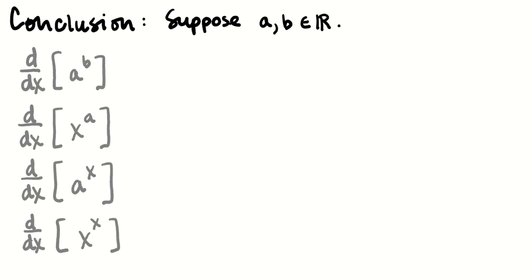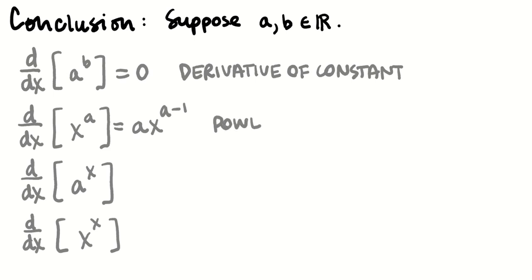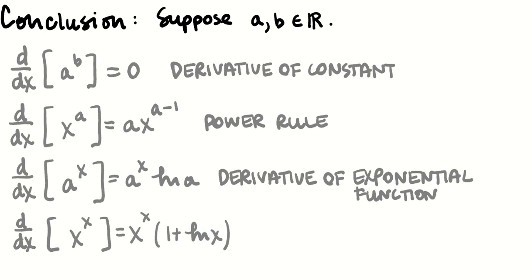This is kind of like all the different combinations of these that we could get. The derivative of a^b, where a and b are real numbers, is equal to zero because it's the derivative of a constant. The derivative of x^a is the power rule, where we bring down a and subtract one from the power. The derivative of a^x is going to be a^x times the natural log of a. That's the derivative of the exponential function. And in this video, I showed you how the derivative of x^x is x^x times (1 plus natural log of x). And this is what requires logarithmic differentiation.